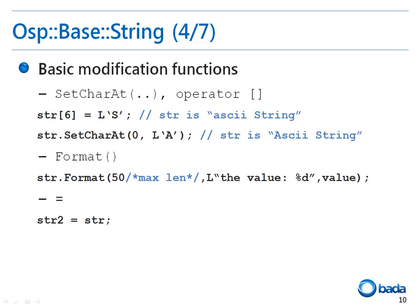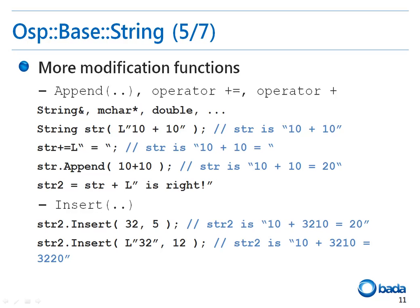To change a character in a string, you can use setCharAt or the square brackets operator. In addition, the format function is provided that corresponds to the sprintf function in the conventional C language. The first parameter specifies the maximum length of the string and the other parameters are the same as those of the sprintf function. You can also assign a string to another string. OperatorPlusEquals and OperatorPlus are provided to allow appending a string to another string. An append function is also provided which can be used to append a string to another string, or to convert an integer value or a floating point type into a string type and append the converted string to a string.